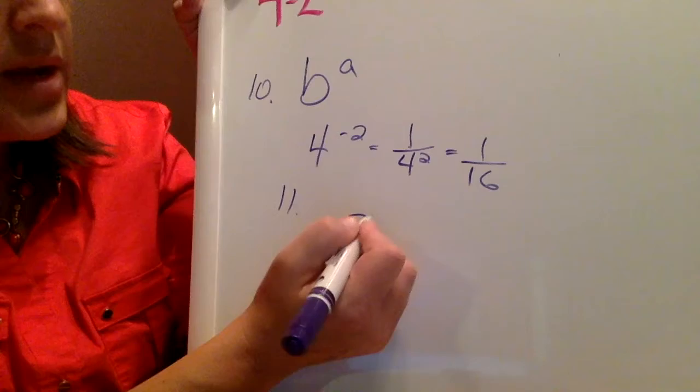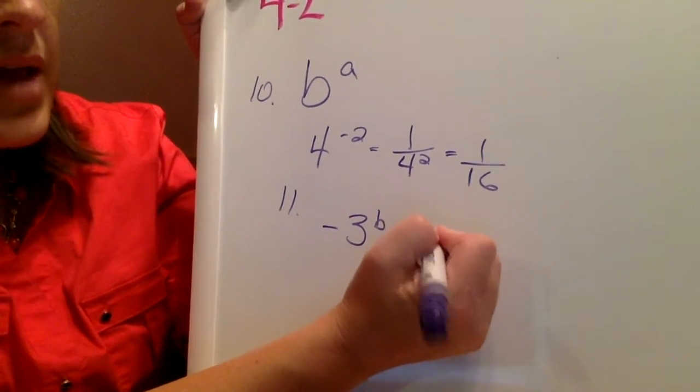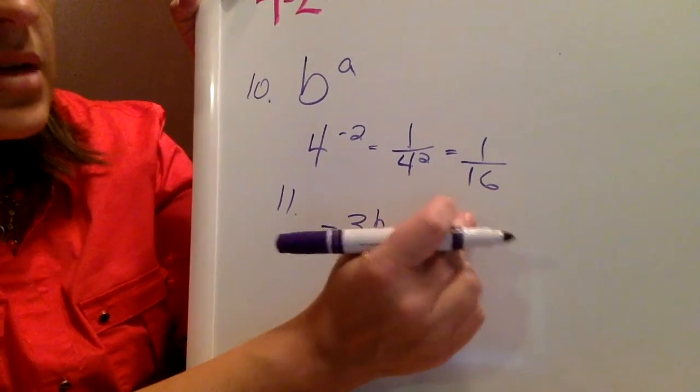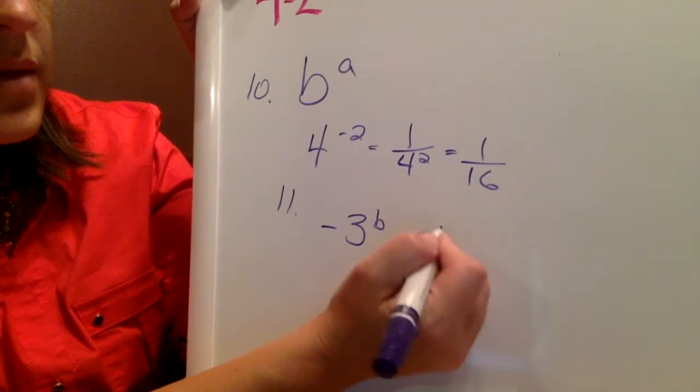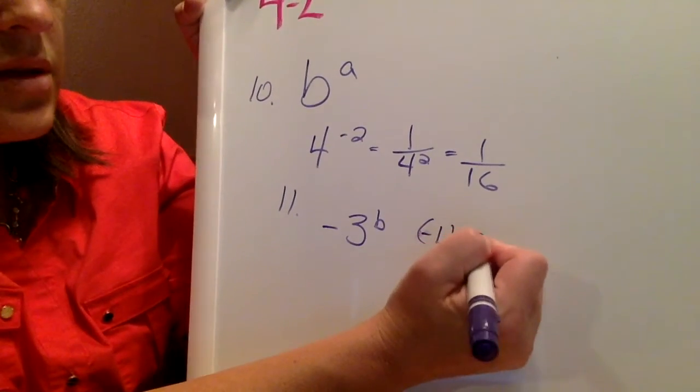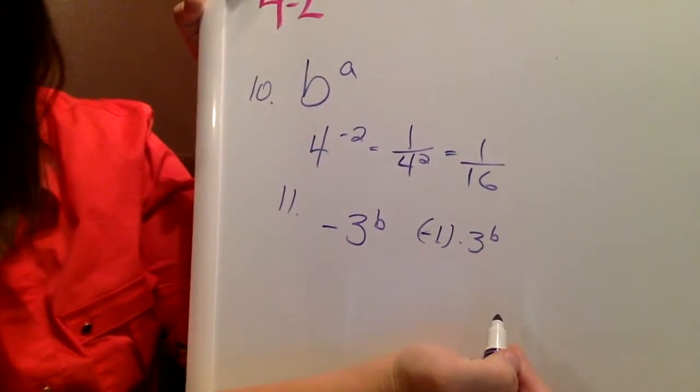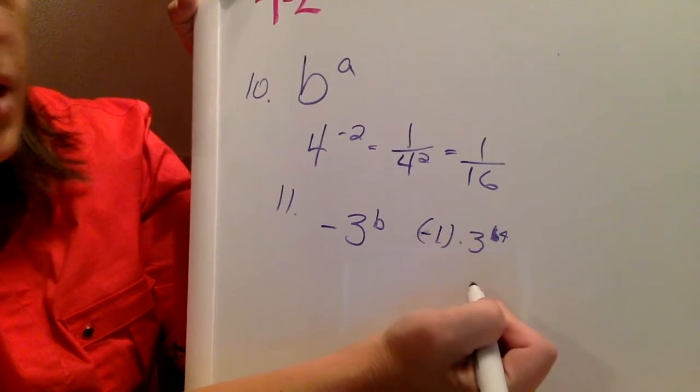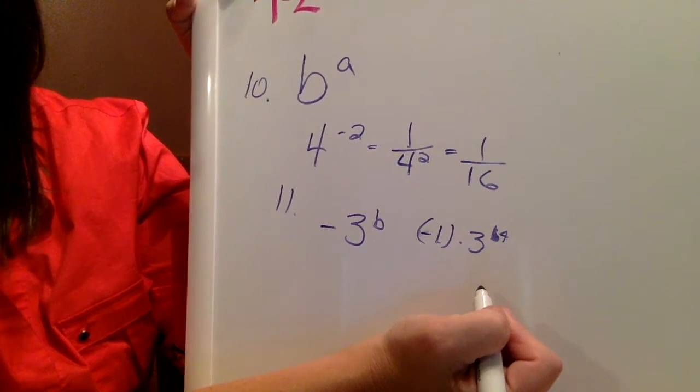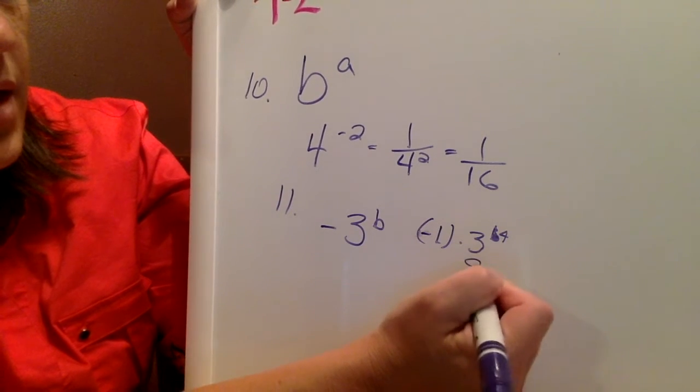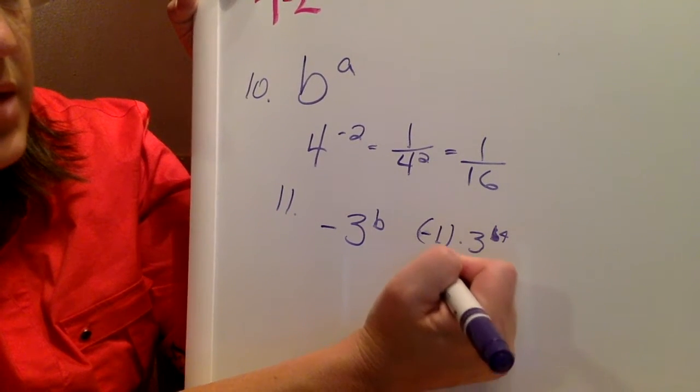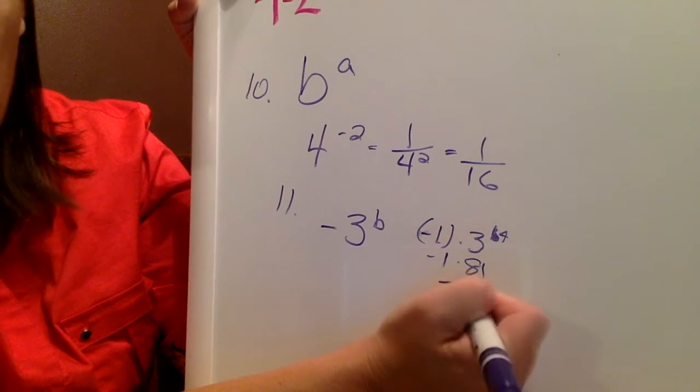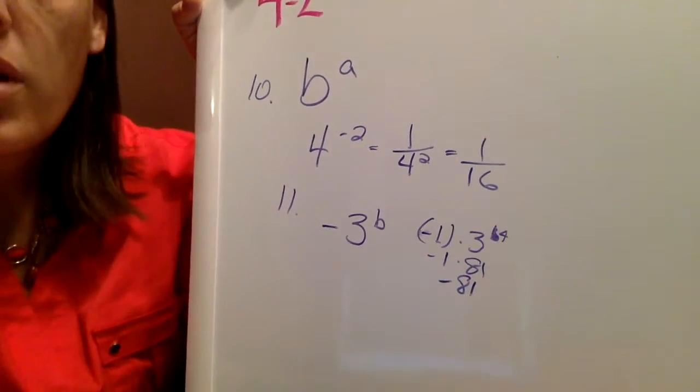And number 11, the opposite of 3 to the b power. The opposite really just means negative 1 times 3 to the b power. And b is 4. 3 to the 4th power is 81. And 81 times negative 1 is equal to negative 81 for number 11.